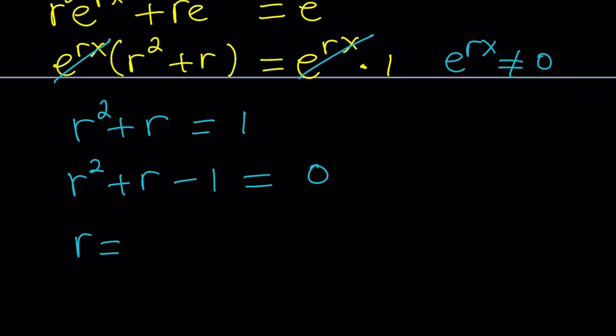So from here, r is just going to be negative b plus minus the square root of b squared, which is one, minus 4ac, which is one plus four. And that gives you the square root of five. Do you remember what this looks like? If you do, please write it down in the comment section.